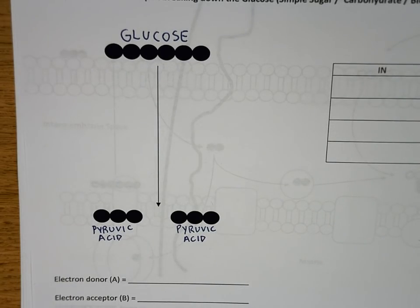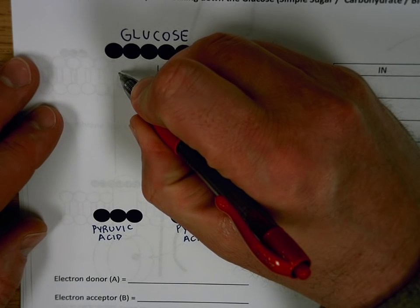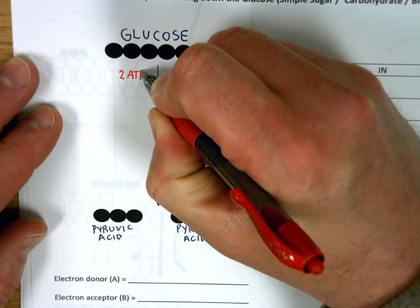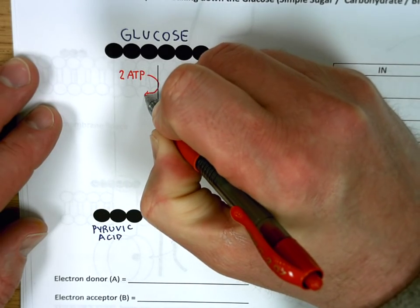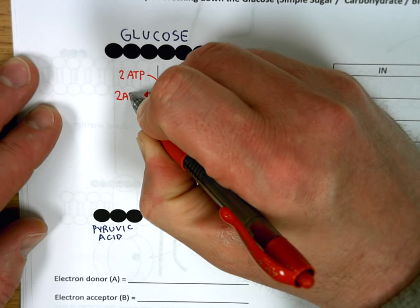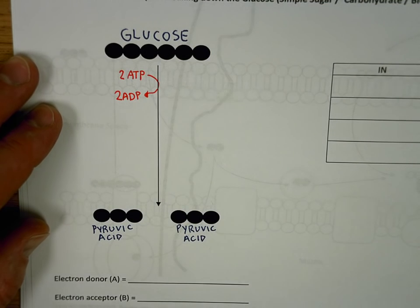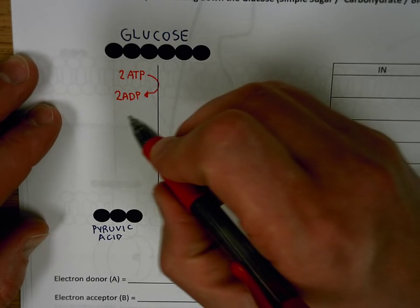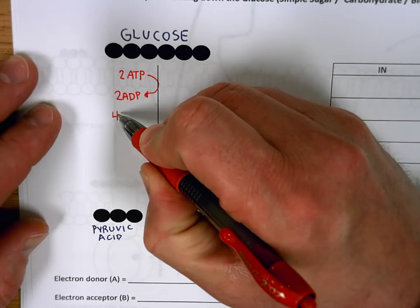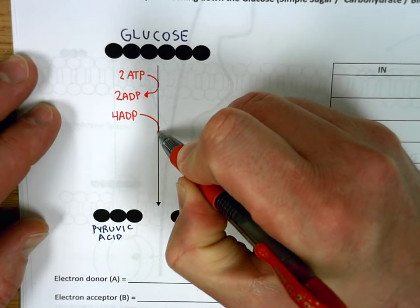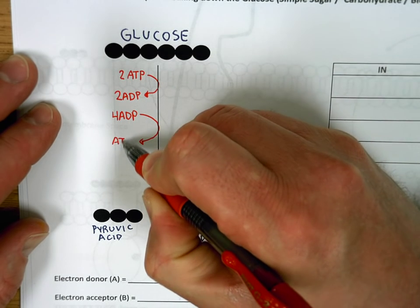As you can imagine, in order to break something in half you need to invest a little bit of energy. So you have to invest two ATPs into this process and you'll get ADP once you remove that third phosphate. Then you can put four ADPs in and it'll give you back four ATPs.